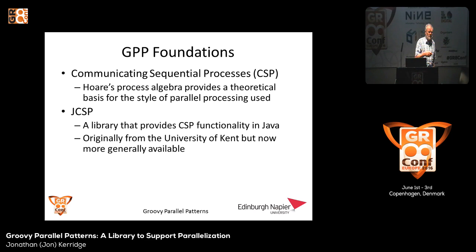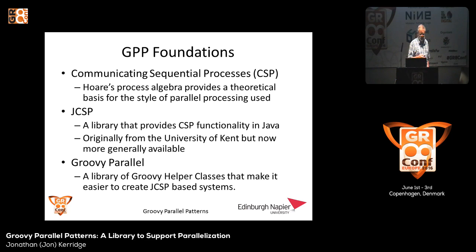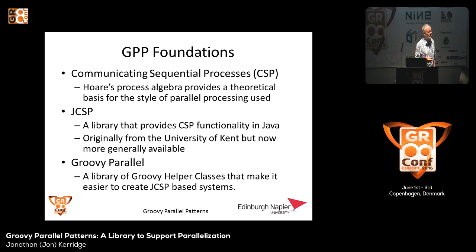However, my view of parallel processing and GPAR's view of parallel processing is somewhat different. When I started to teach this, students complained that they had to write a lot of stuff, and it was around this time that Groovy came out. So together with some colleagues, we sat down and wrote a few very simple, very uncomplicated helper classes that basically mean you can build a parallel system with just the code that you want and not everything else that you need when you get Java. It was essentially easier to create JCSP-based systems using these Groovy helper classes.